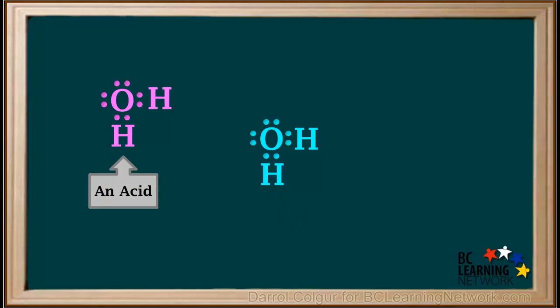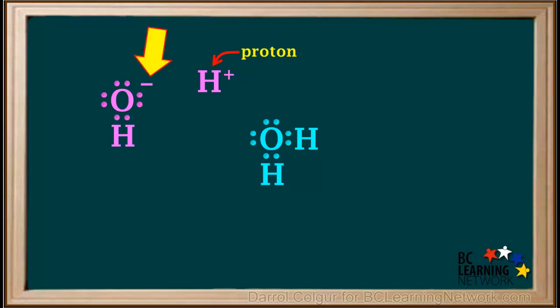A hydrogen atom breaks away from the water on the left and leaves its shared electron behind. Because it has lost an electron, it acquires a positive charge, becoming an H-plus ion or a proton. Because the OH has gained an electron, it acquires a negative charge, and it's called the hydroxide ion, with the formula OH-.